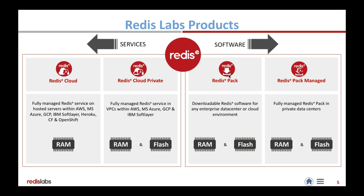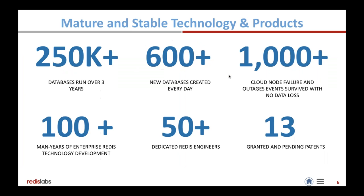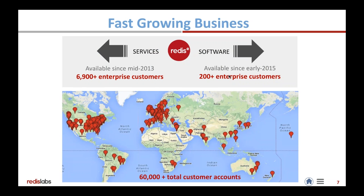The Flash technology I'm going to talk about applies to all three product lines, and you can get it in all three. This technology is mature — we've been with Redis for quite a long time. At the moment, we have over 250,000 databases that we manage, more than 600 databases created per day, and we've survived many node failures in the cloud and outages without any data loss. We have over 7,000 paying customers, and over 60,000 accounts on Redis Cloud today.